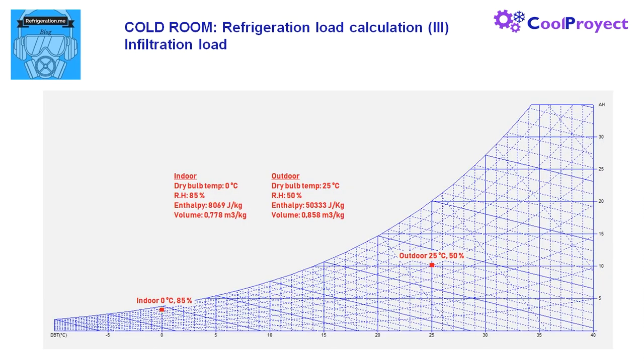Here is the chart with the position of the outdoor and indoor points. As we can see here the indoor temperature is 0 degrees and relative humidity is 85 percent. This is the indoor point and we have here the outdoor point with dry bulb temperature of 25 degrees and relative humidity about 50 percent.